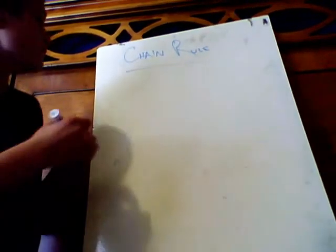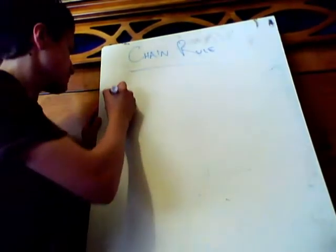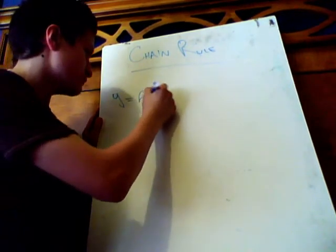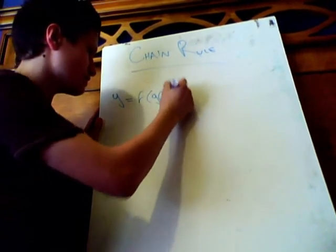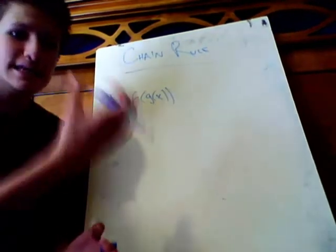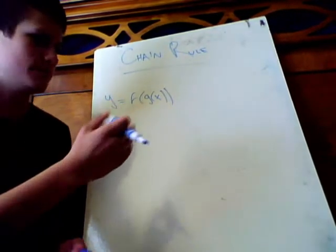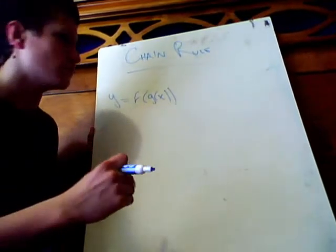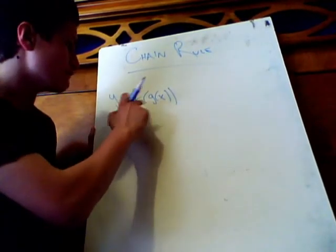So, let's work this. y equals f of g of x. So, let's say we have a function nested with another function. So, we have y equals f of g of x. How could you possibly take the derivative of this?